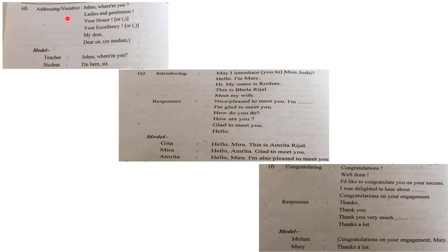The fourth type is addressing or vocative. It means being vocal or asking for something, like addressing something. If you want to address something, you might use these kinds of socializing communicative functions. Examples: Jones, where are you? Ladies and gentlemen. Your honor. Your excellency. My dear. Dear sir or madam.